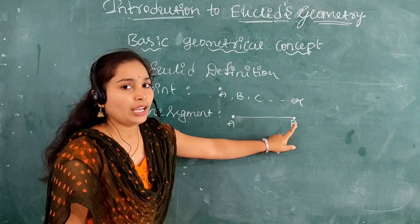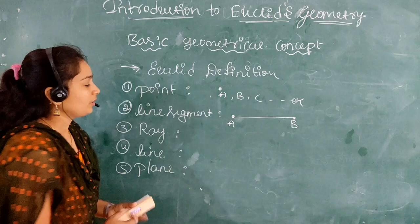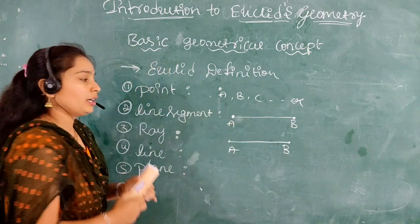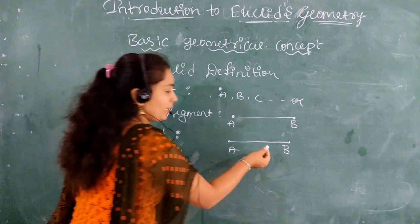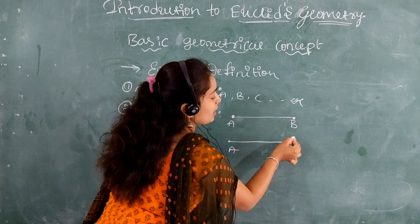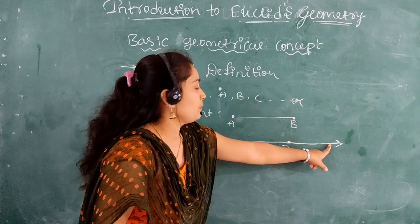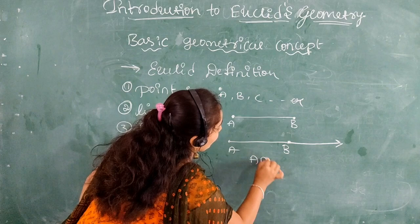The next one is Ray. A ray begins as a line segment AB, and one end — either the starting point or the ending point — extends infinitely in one direction. That type of line we call a ray, and we denote it as ray AB.